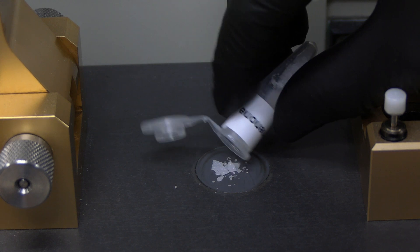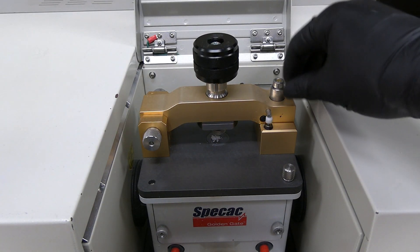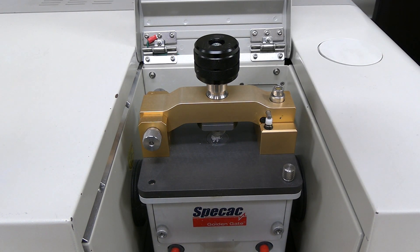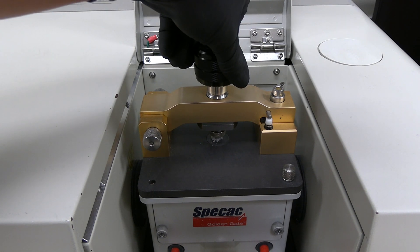Place enough sample to completely cover the sample window. Close the anvil arm. Press the locking lug and turn it clockwise to lock the anvil arm. Turn the anvil knob clockwise until the knob is finger tight. Do not over tighten.